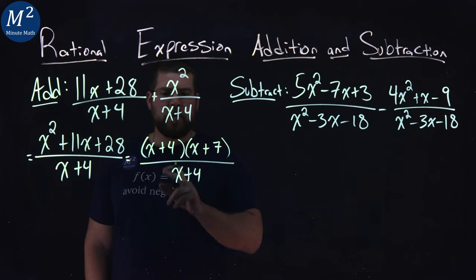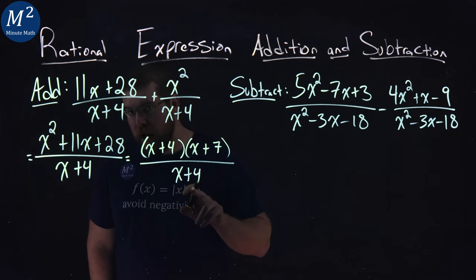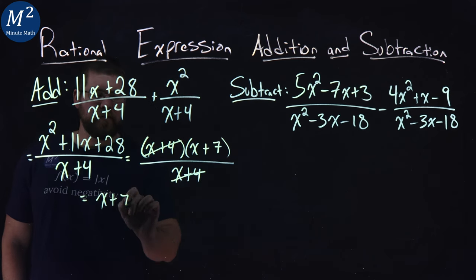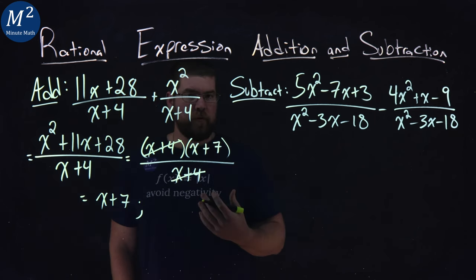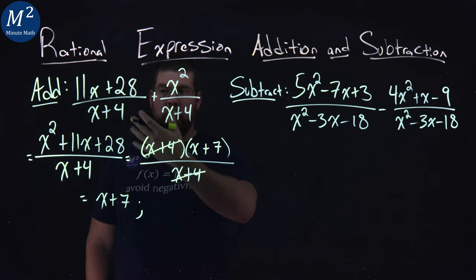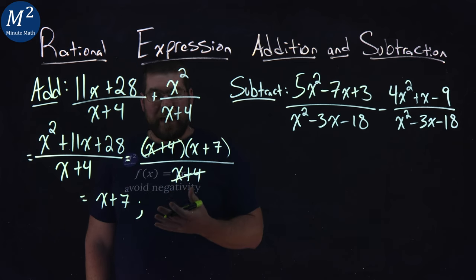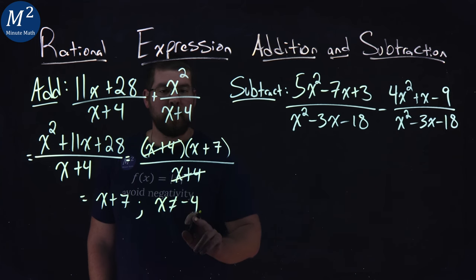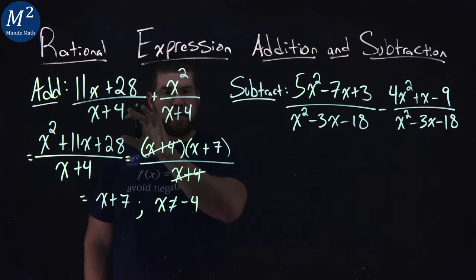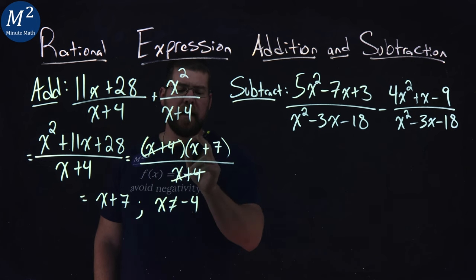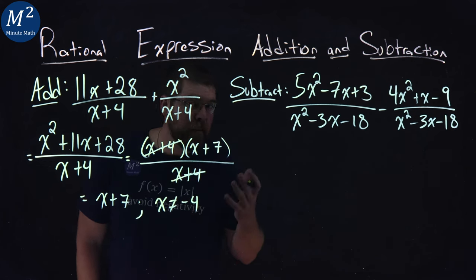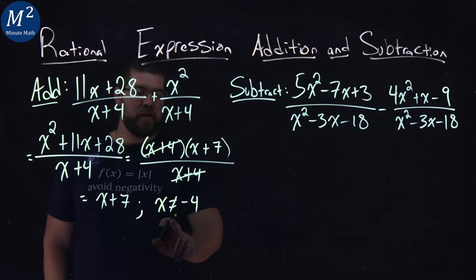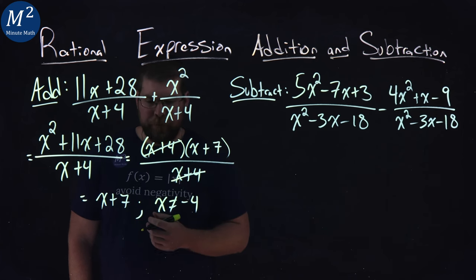Now notice one last thing. We have x plus 4 in the numerator and x plus 4 in the denominator. They can cancel out and we're left with x plus 7 left over. But we want to be careful here. When we cancel out the denominator, what doesn't show with our final simplification is that x cannot be negative 4. Because if we had negative 4 in our original equation, that would cause the denominator to be zero and be undefined. So that information disappears with our final simplification, so we want to make that known right here.